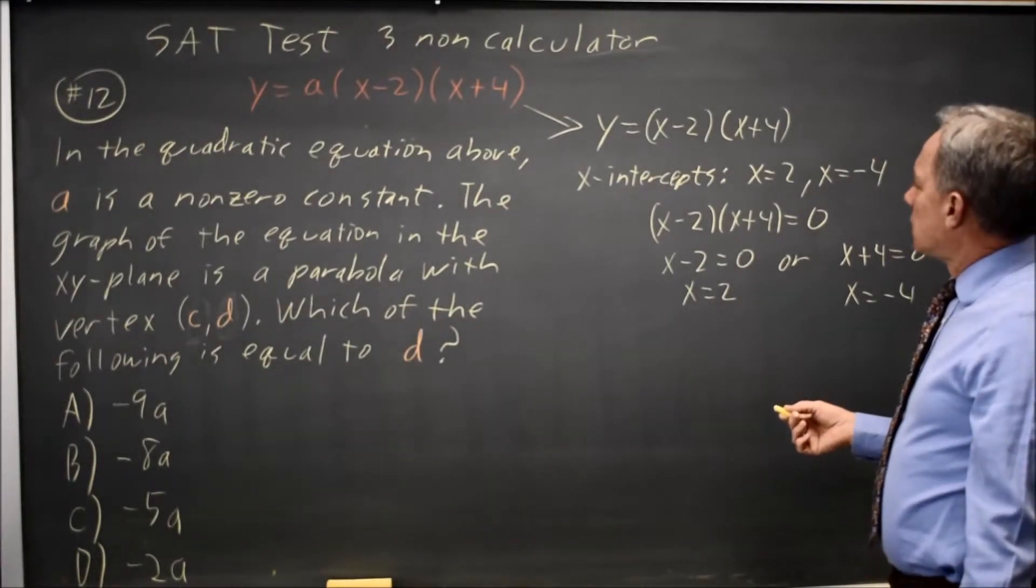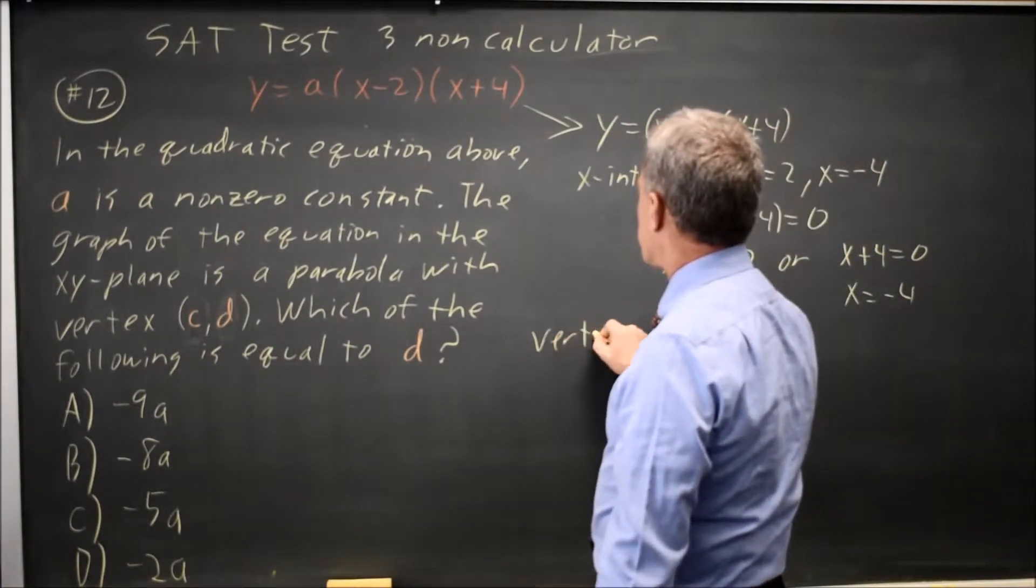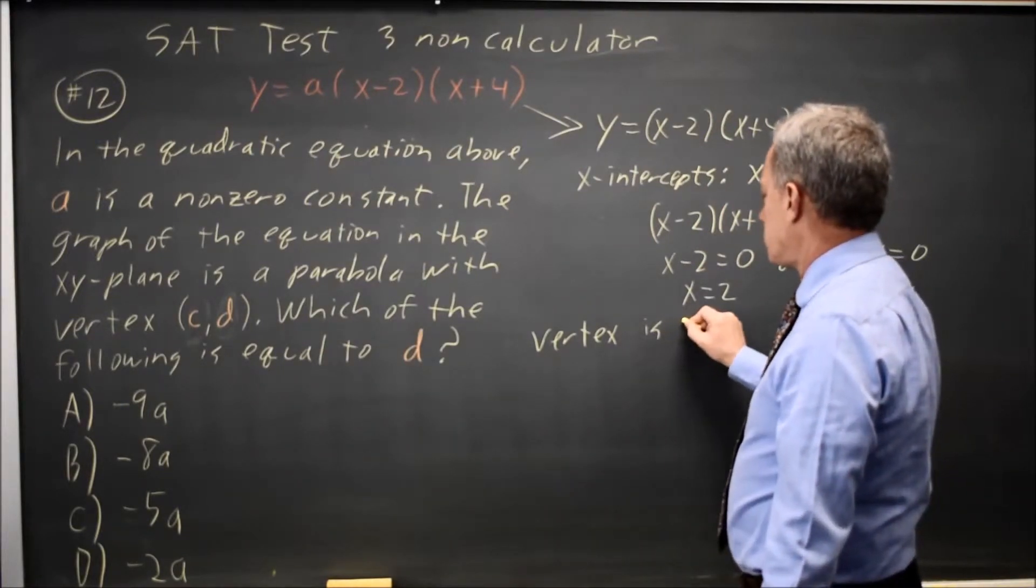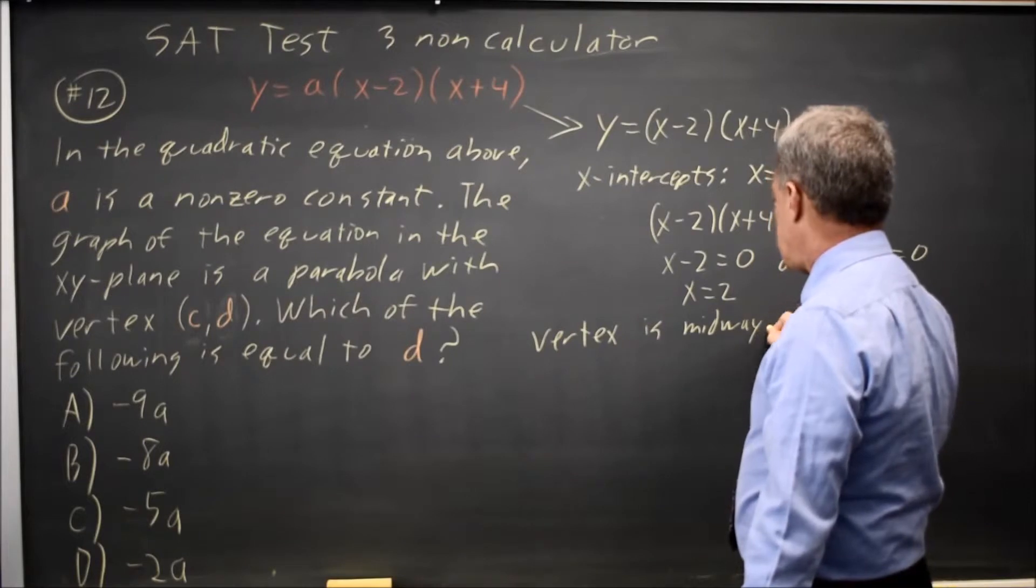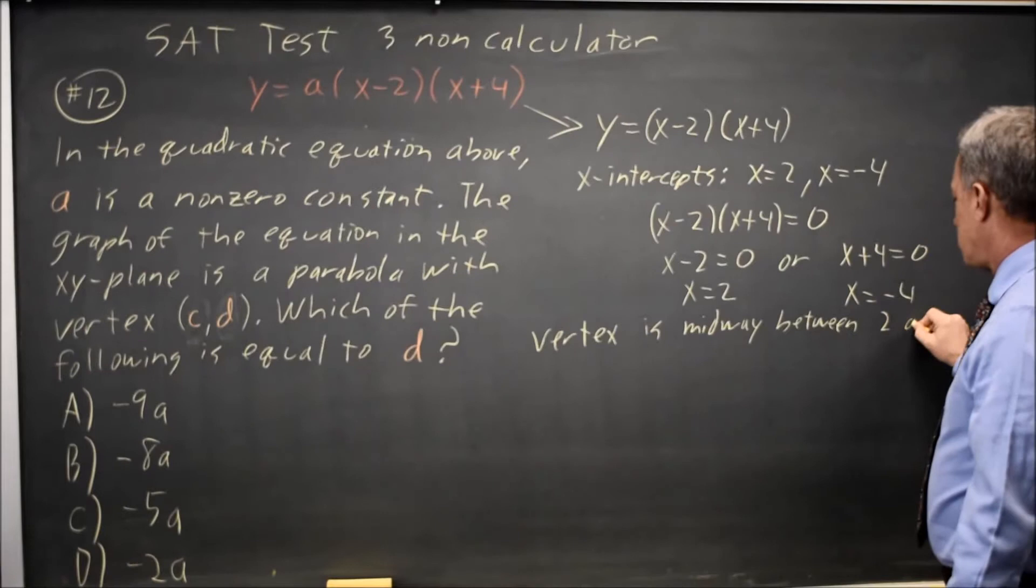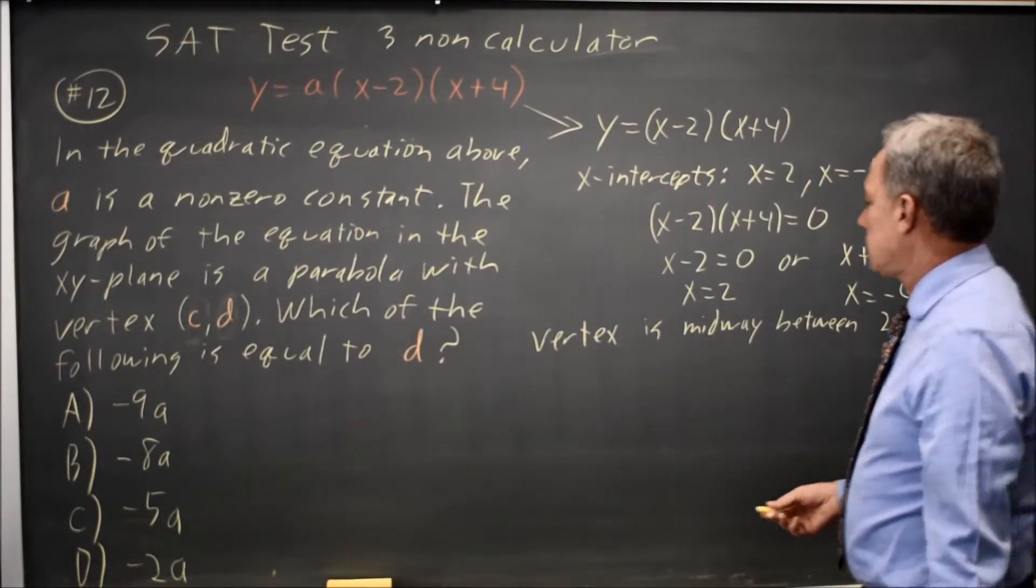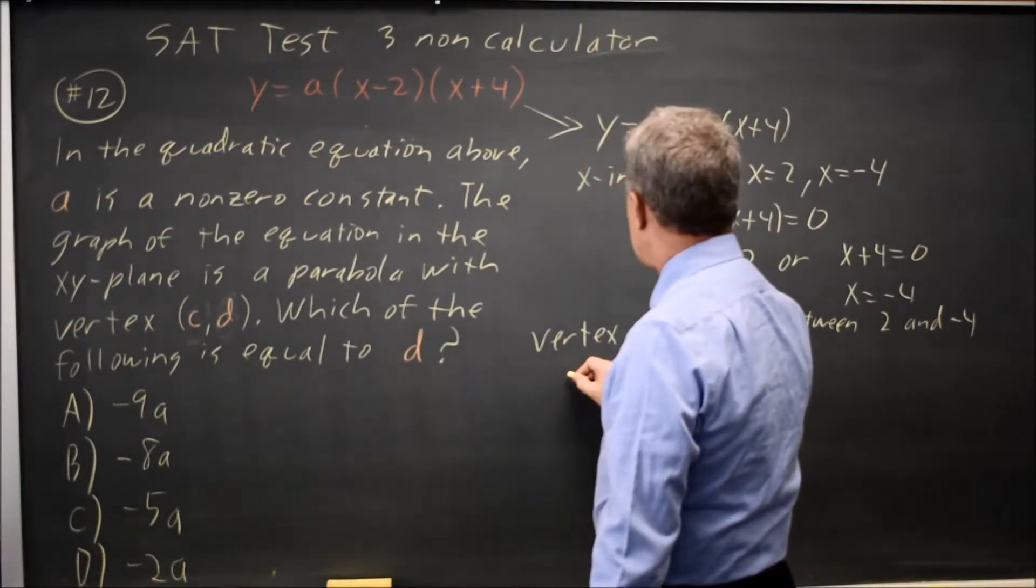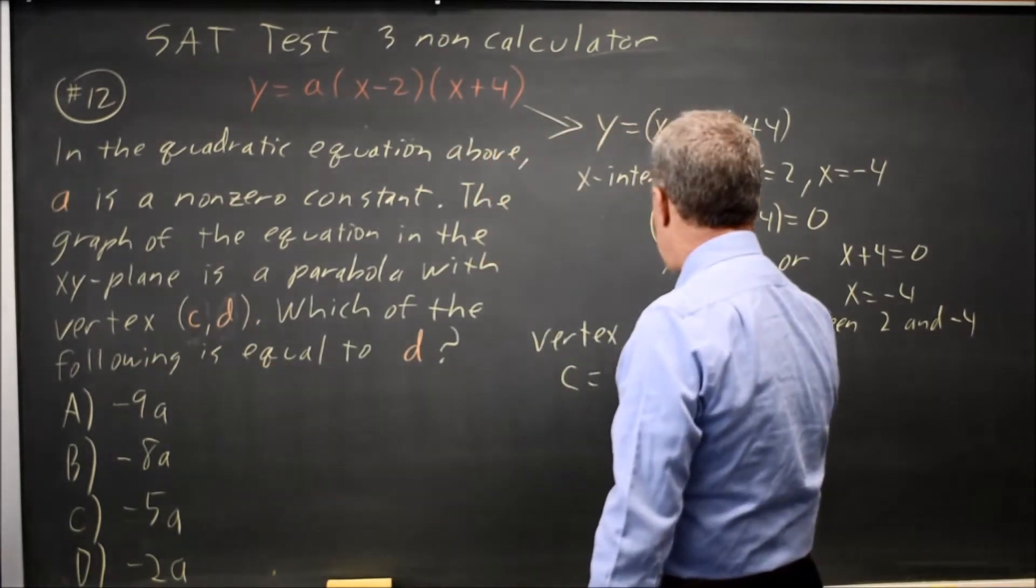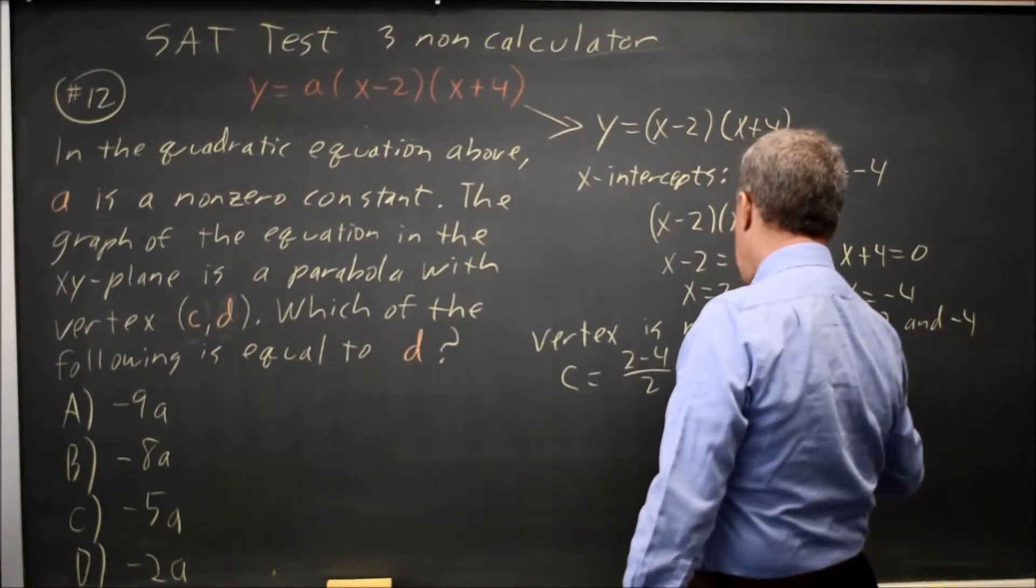The vertex is midway between the x-intercepts. The midpoint between x equals 2 and x equals negative 4 is at x—I'm going to call that c because that's the x-coordinate of the vertex—x equals (2 plus negative 4) over 2, which is negative 2 over 2 equals negative 1.